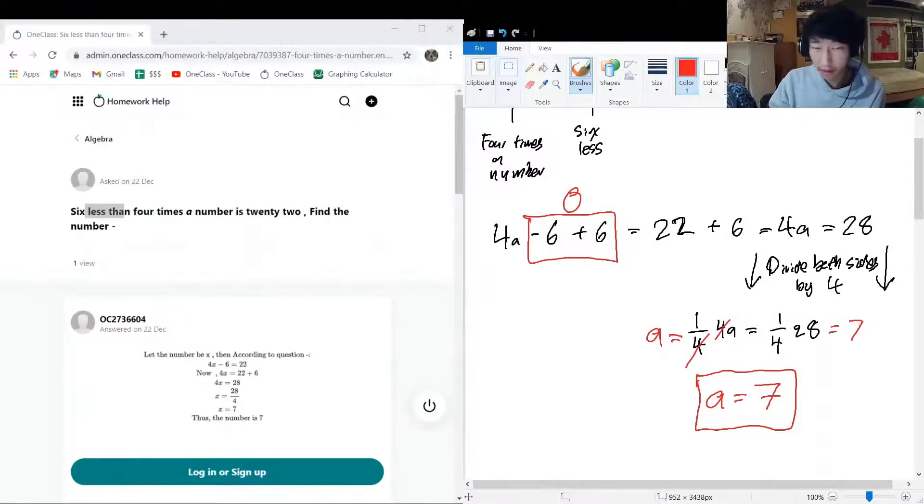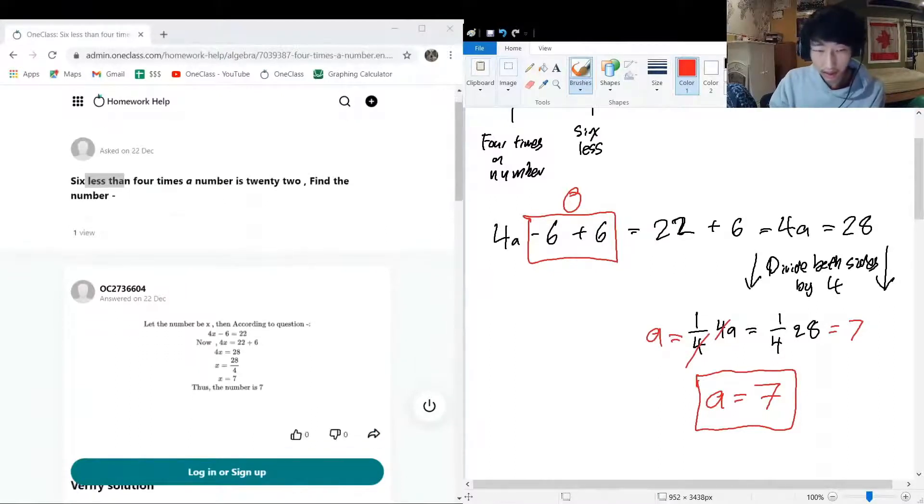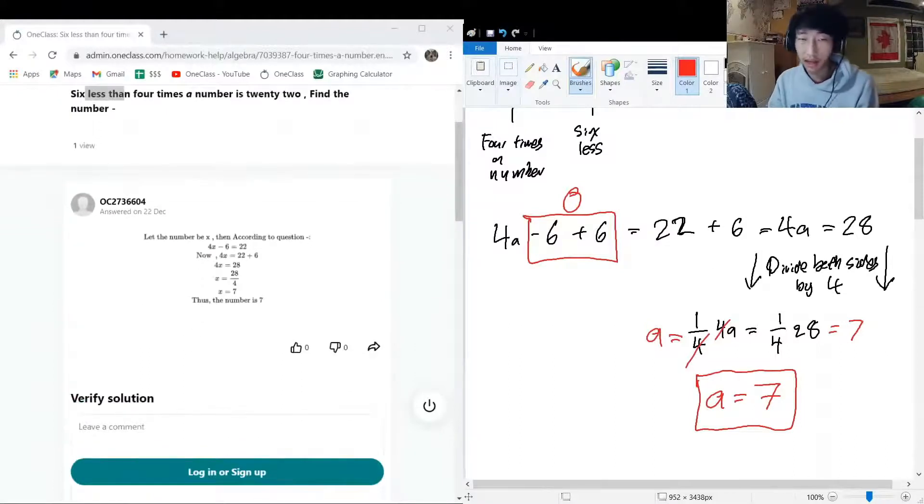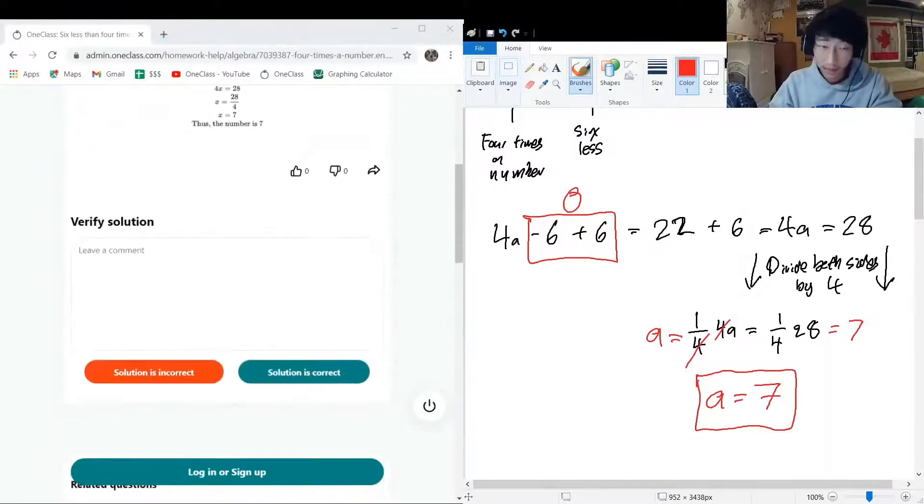So exactly. What they see here is they also came to a conclusion that the variable, they used X, we used a, but doesn't really matter which one you use as long as you can keep it straight in your head. It's gotta be 7. So the above solution is good.